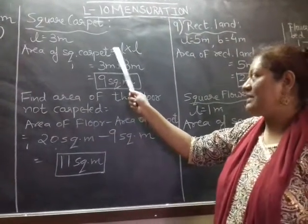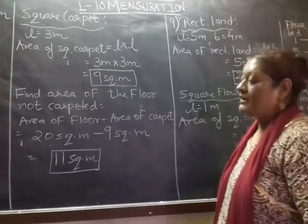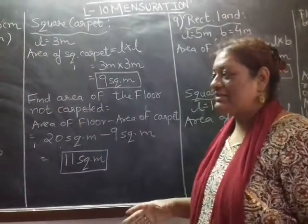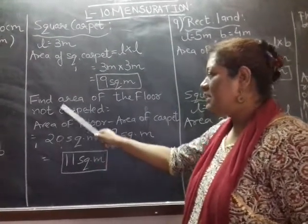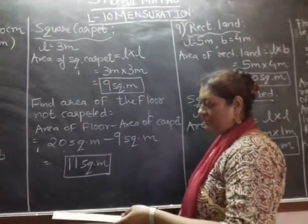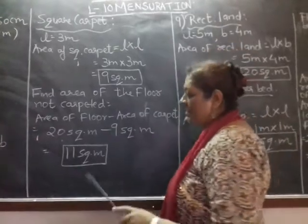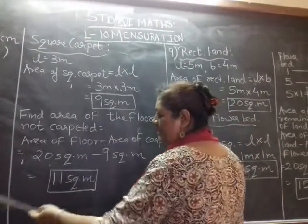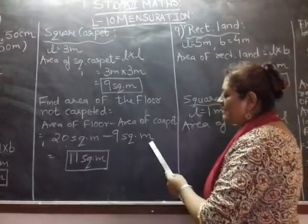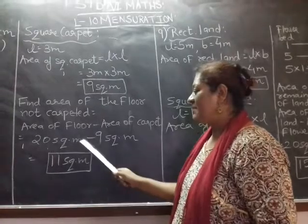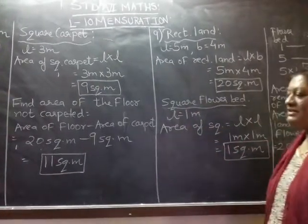For the square carpet, area is L into L: 3 into 3 = 9 square meters. Now we want to find how much area is left uncovered by the carpet. Area of floor not carpeted = area of rectangular floor minus area of carpet = 20 minus 9 = 11 square meters. That is the uncarpeted area.